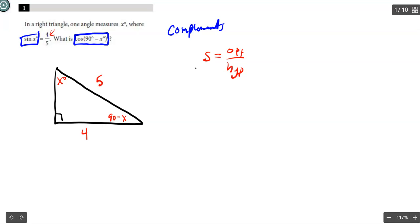90 minus x would be this angle right down here, because that's going to be 90 take away whatever x is. The cosine, remember, is adjacent over hypotenuse. The adjacent leg is also 4 over 5. So the big idea is that the sine of an angle and the cosine of an angle should be equal to each other.